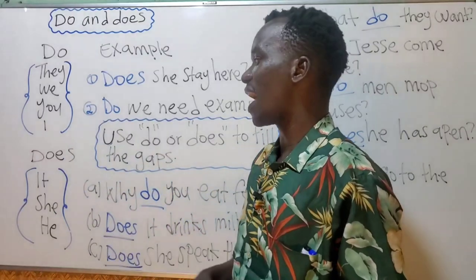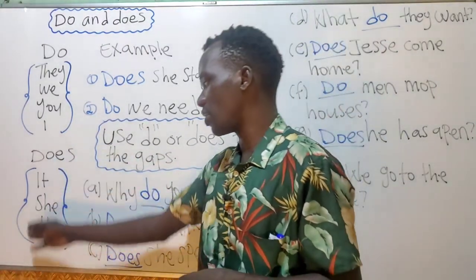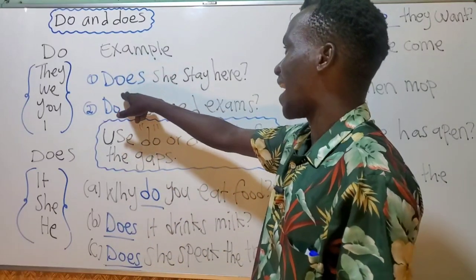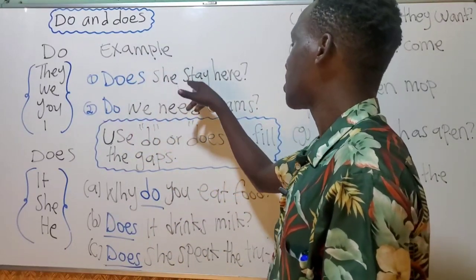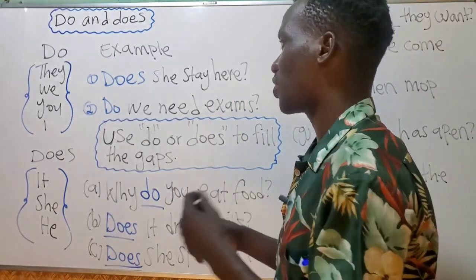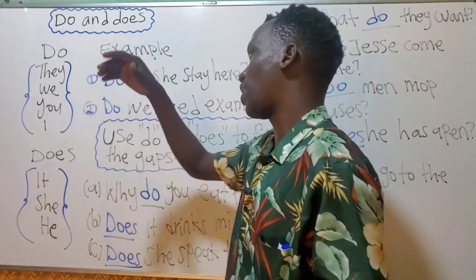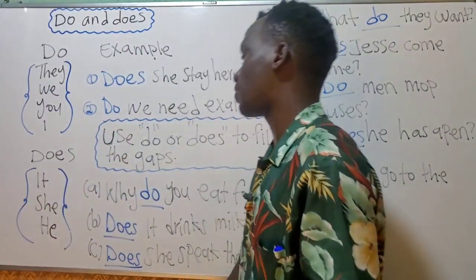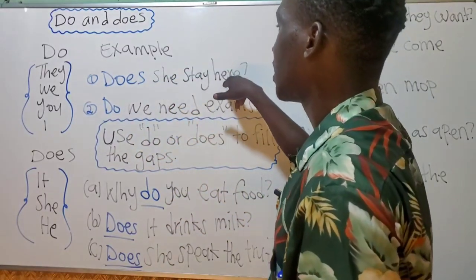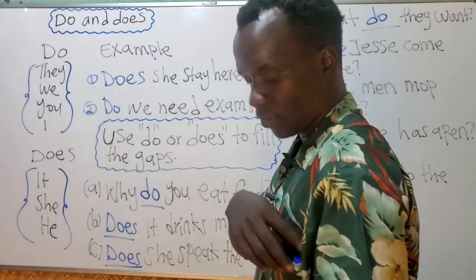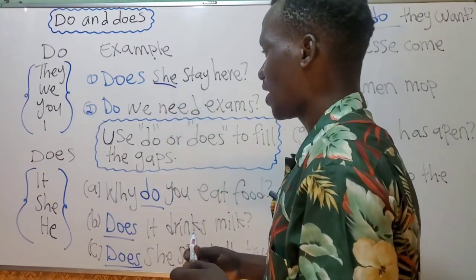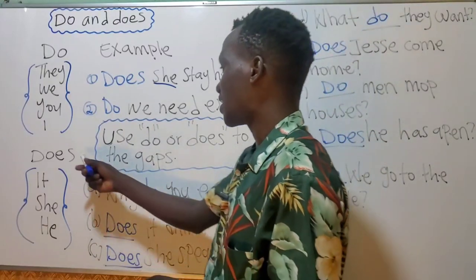Any of the singular pronouns — 'he,' 'she,' 'it' — take 'does.' For example: 'Does she stay here?' This is singular — one lady — so you use 'does.'